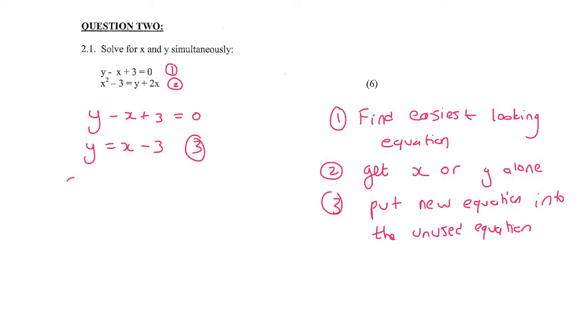So what does that look like? It means that I'm going to take equation number three and I'm going to replace all the y's with x minus three because you see here it says that y is equal to x minus three. So I'm going to find all the y's and I'm going to replace that with x minus three.